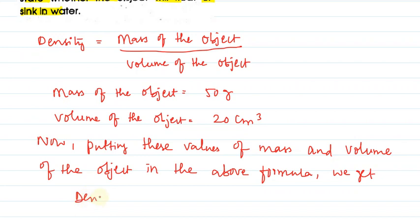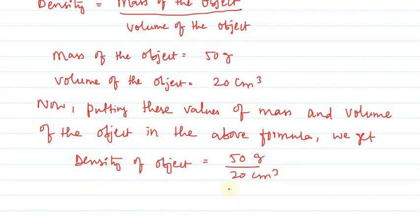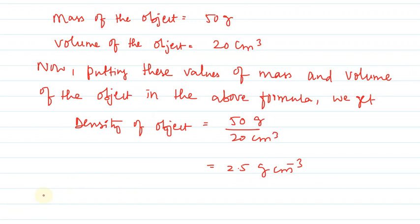Density of object is equals to 50 grams upon 20 centimeter cube. 50 upon 20, 2.5 aayega. 2.5 grams per centimeter cube aayega. So ye kya density of object hai?